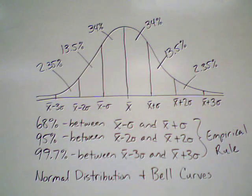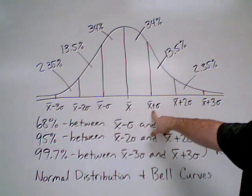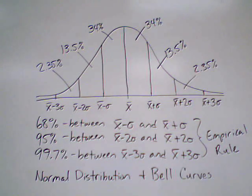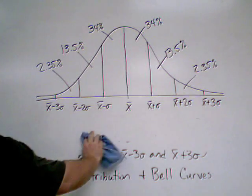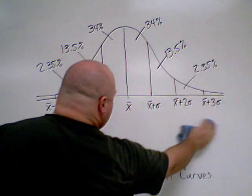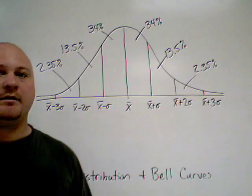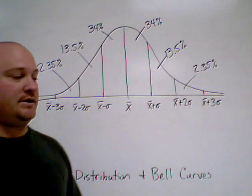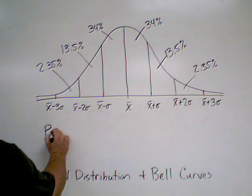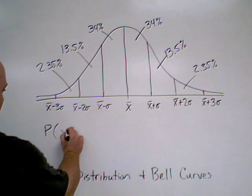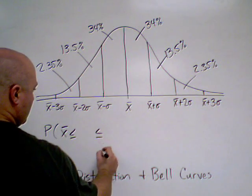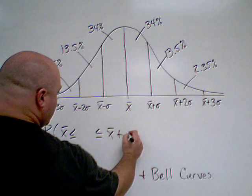This might be a little confusing with x-bar and x-bar plus sigma notation, so we're going to look at an example. The reason we bring this up is because what we're going to look at is the probability that any item in our data set lies between two boundaries. For example, we want the probability — that's what the P stands for — that any item we pick at random is going to fall between, let's say, our mean and our mean plus a standard deviation.